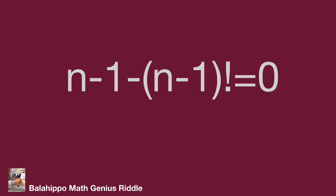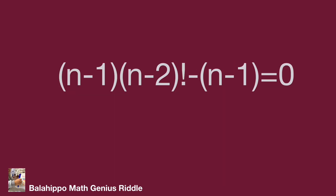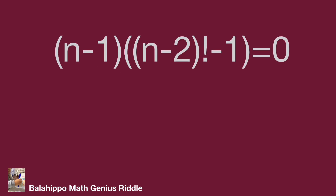We expand (n minus 1) factorial as (n minus 1) times (n minus 2) factorial. So the equation becomes: n minus 1 minus (n minus 1) times (n minus 2) factorial equal to zero. Factoring out the common factor (n minus 1), we get: (n minus 1) times [1 minus (n minus 2) factorial] equal to zero.